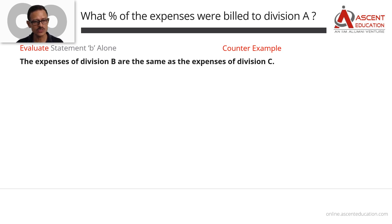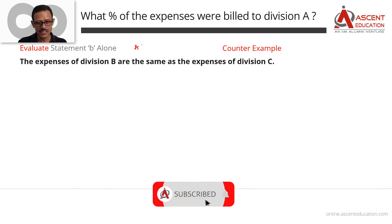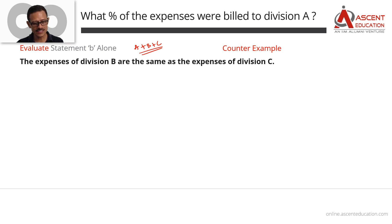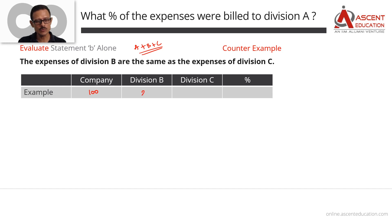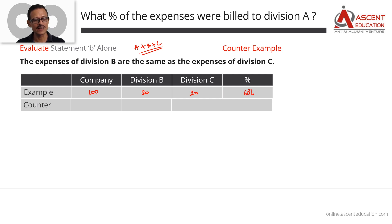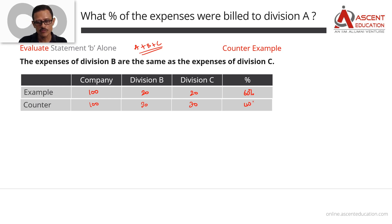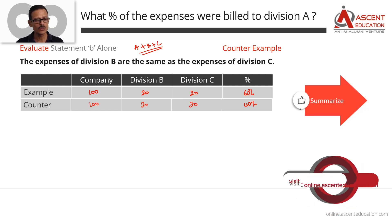Now evaluate Statement B alone: the expenses of Division B are the same as the expenses of Division C. Using a counter-example: if the company's total expense is 100 and B and C are each 20, then A is 60. But if B and C are each 30, then A is 40. We get different answers, so Statement B alone is also not sufficient.